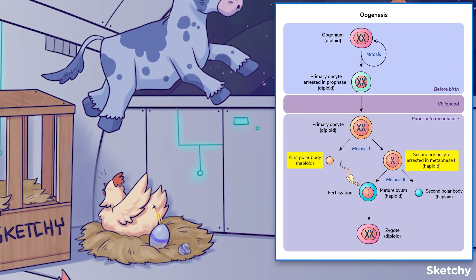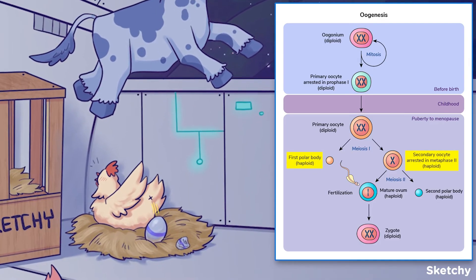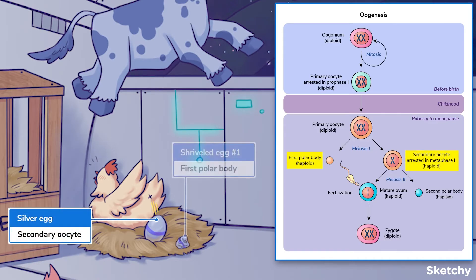This silver egg represents the secondary oocyte. And the shriveled egg nearby? Well, that's our first polar body. I sometimes call it the 'dead' polar body, because that's where this one ends up. Rest in peace, my friend. You lived a polarizing life.